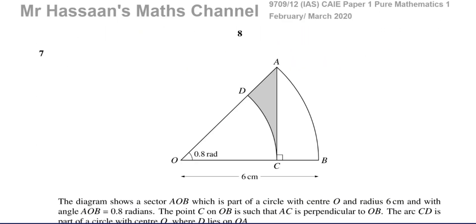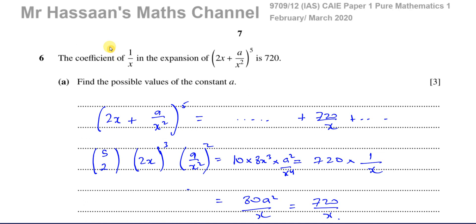That's the answer to question number 6, part B — all about binomial expansion. Other questions from this February-March 2020 paper can be found in the playlist that will appear here. Other questions about binomial expansion from P1 of the Cambridge syllabus can be found in this playlist. You can subscribe to my channel by clicking this link, and watch the video here to find out how to use my channel efficiently. Thank you for watching and see you soon.